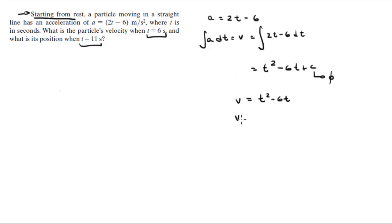The velocity at 6 is equal to 6 squared minus 6 times 6, which is 36 minus 36 and comes out to be 0 meters per second. What we did is plug in the 6 into the t.